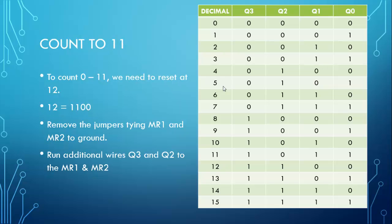To count to 11, for instance, we would need to reset at 12. So here and here, it's where we need to reset Q3 and Q2. So we would not have the master resets tied to ground, and we would run wires from Q3 and Q2 to the master resets.